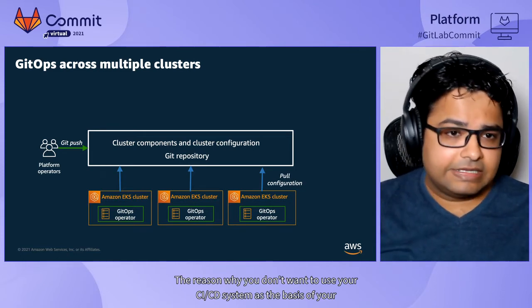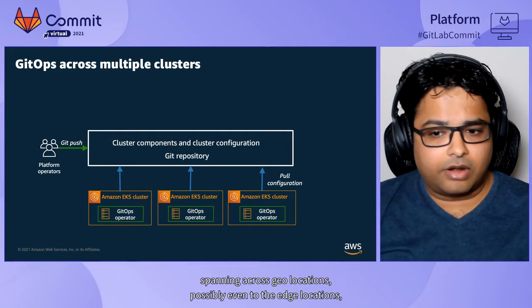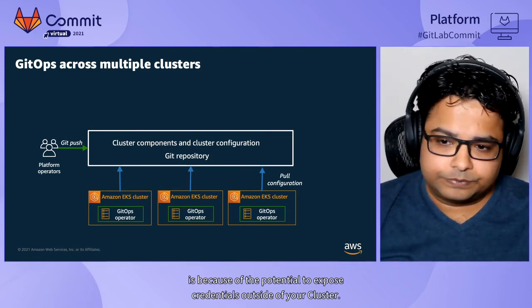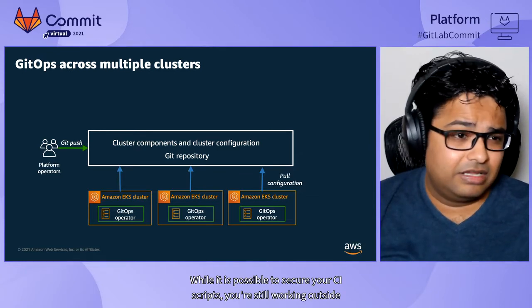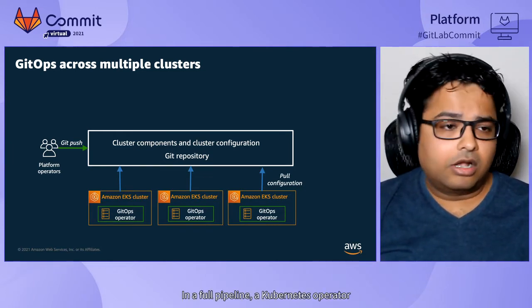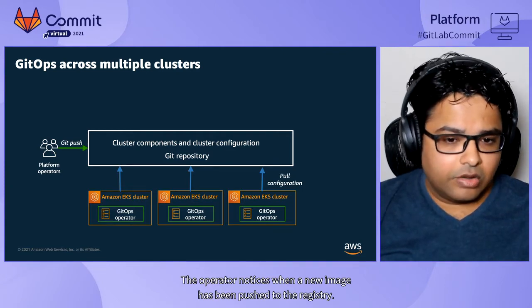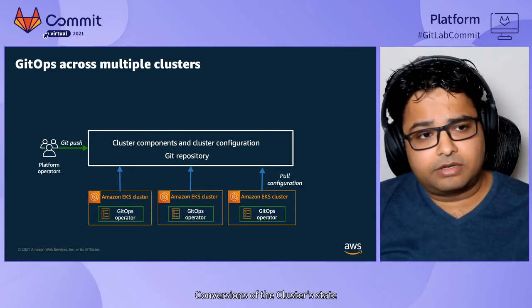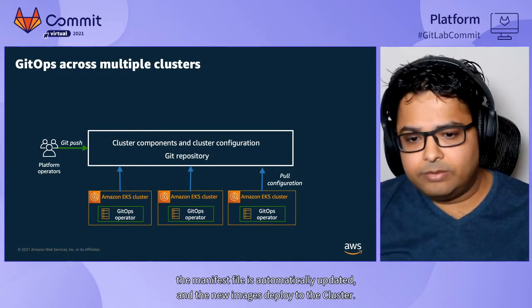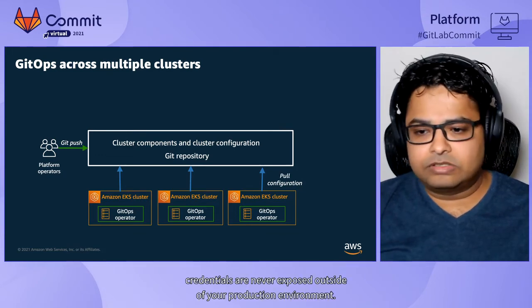The reason you don't want to use your CI/CD system as the basis of deployments — specifically when scaling software deployments to distributed clusters spanning across geolocations, possibly even to edge locations — is the potential to expose credentials outside of your cluster. While it is possible to secure your CI scripts, you are still working outside of the trusted domain of your cluster, which is not recommended. In a pull-based pipeline, a Kubernetes operator deploys new images from inside the cluster: the operator notices when a new image has been pushed to the registry, conversion of cluster state is triggered, the manifest file is automatically updated, and the new image is deployed — your cluster credentials are never exposed outside of your production environment.